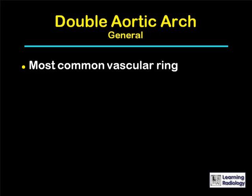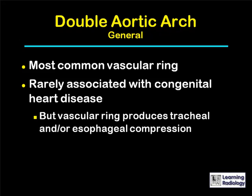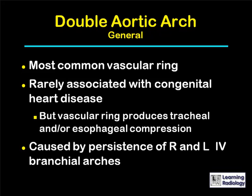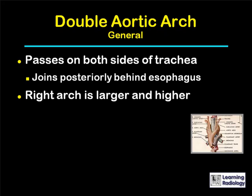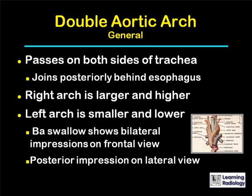Double aortic arches. In general, a double aortic arch is the most common vascular ring. It is rarely associated with congenital heart disease, but the vascular ring produces tracheal and/or esophageal compression. It's caused by persistence of the right and left fourth branchial arches. The double aortic arch passes on both sides of the trachea and joins posteriorly behind the esophagus. The right arch is usually larger and higher than the left. A barium swallow will show bilateral impressions on the barium-filled esophagus on the frontal view and a posterior impression on the lateral view.